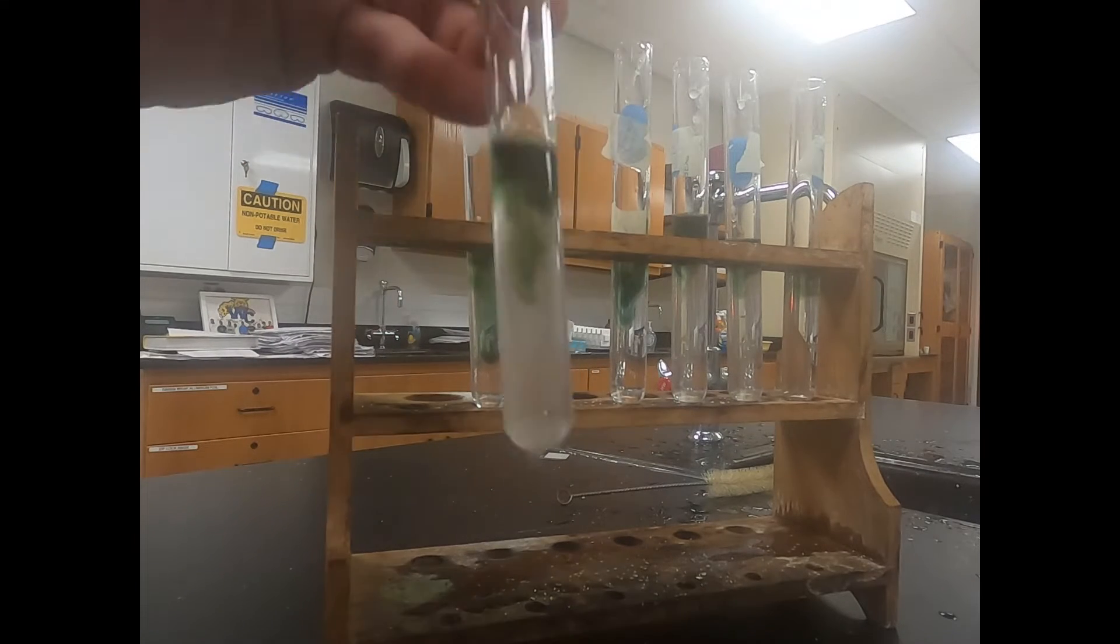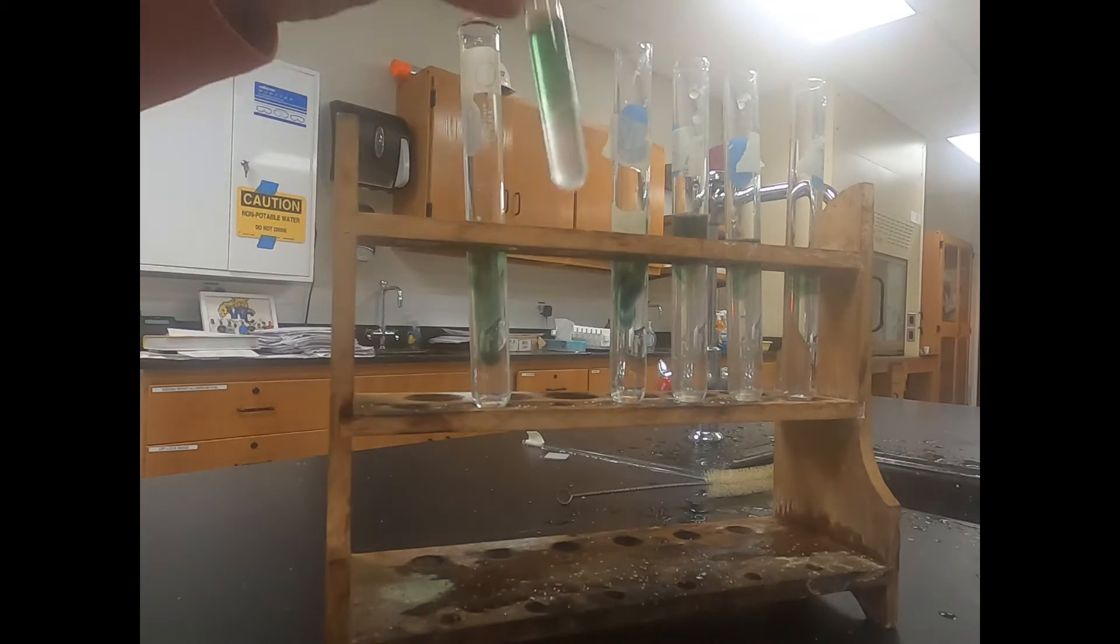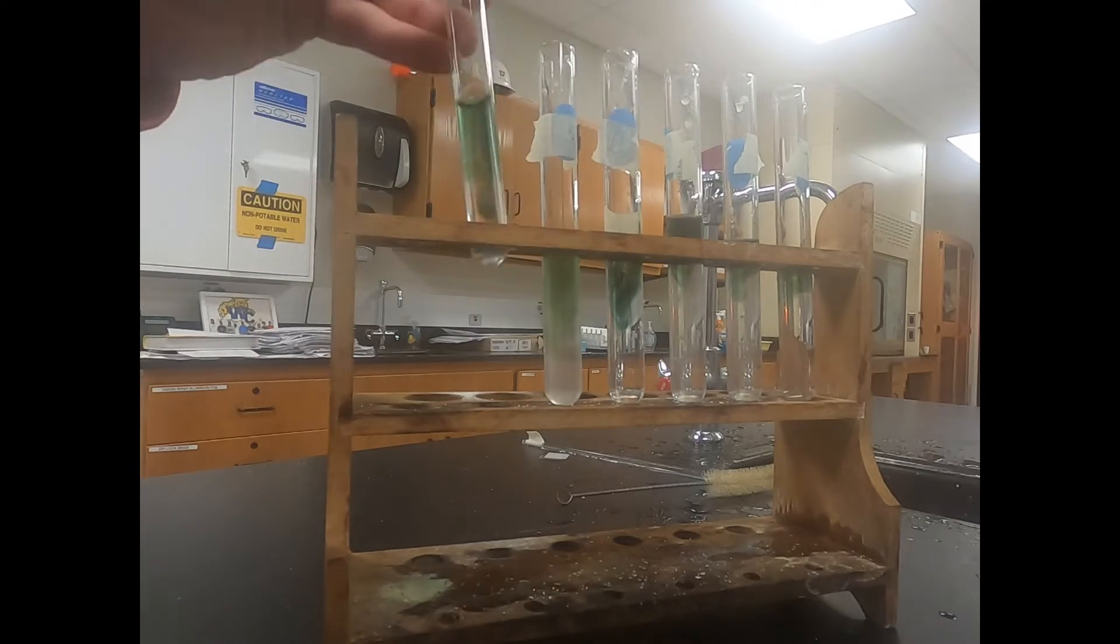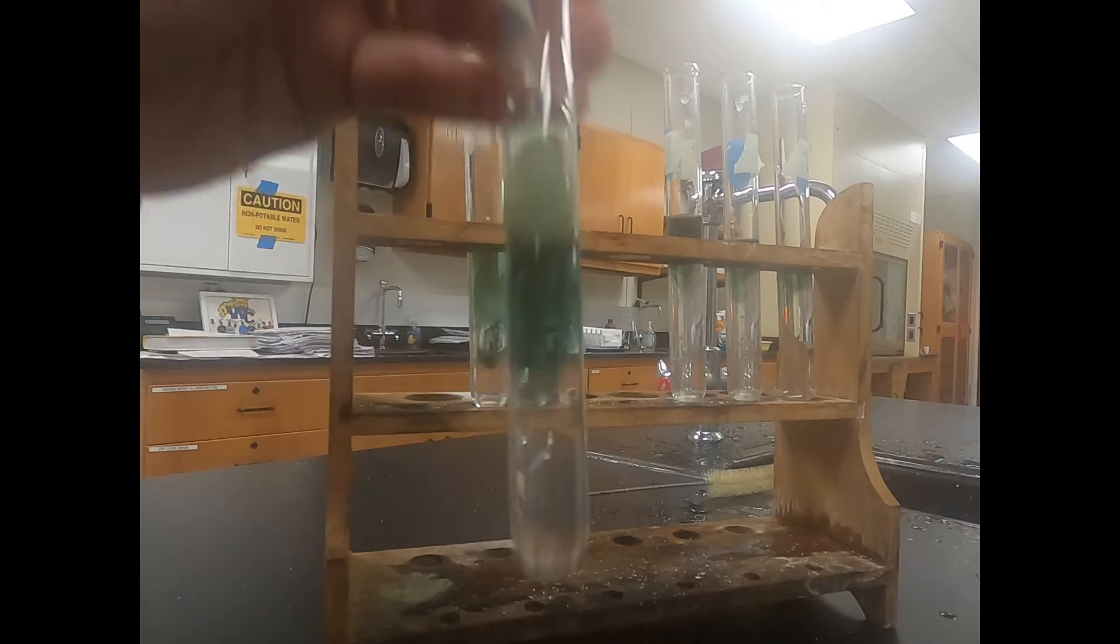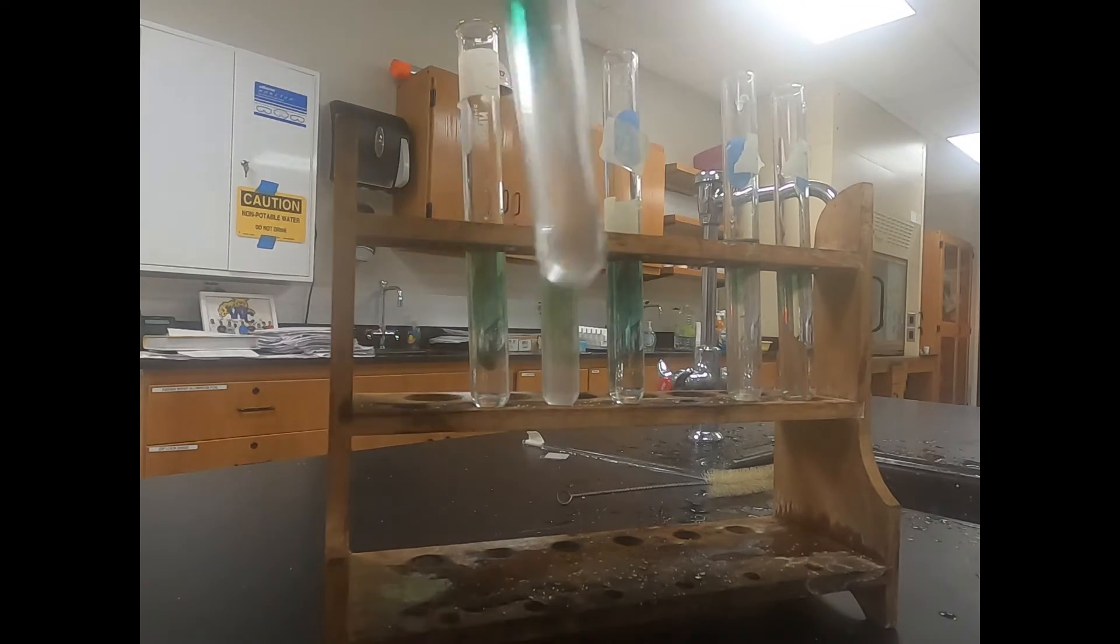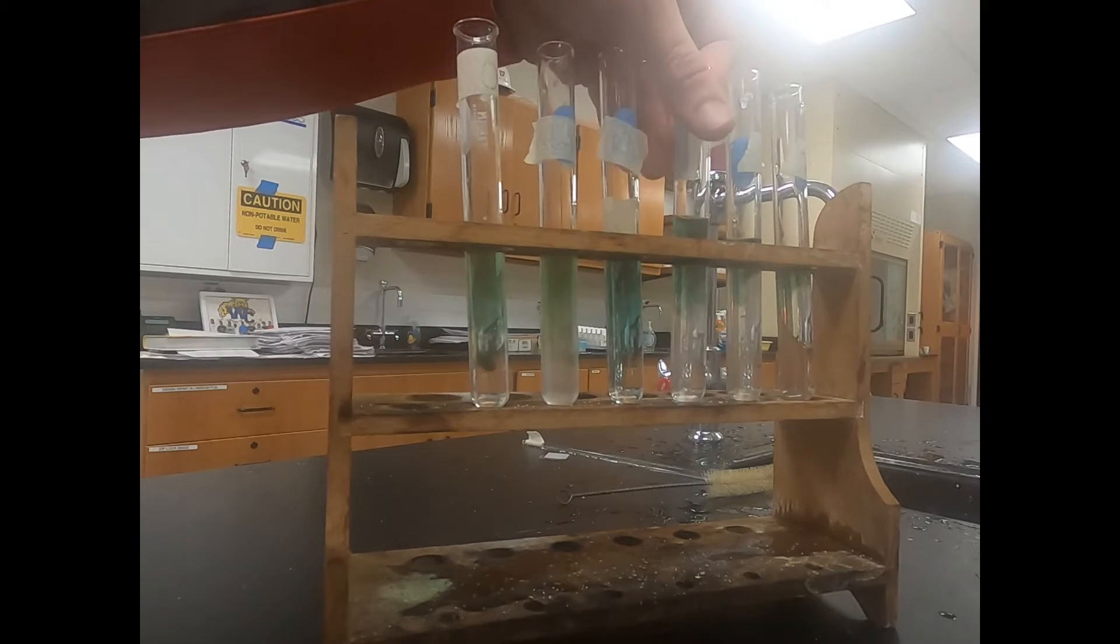Once you have the bromethyl blue added to each one of your test tubes you want to gently swirl it to mix it throughout that test tube. We're just going to gently swirl it to help it mix evenly. As we start weighing the yeast it should have some time to help diffuse throughout that test tube.